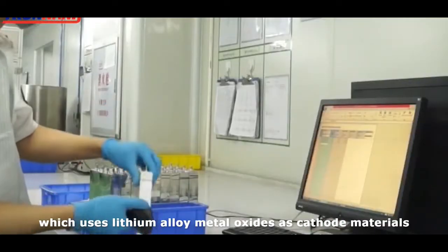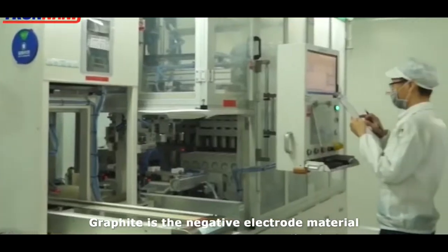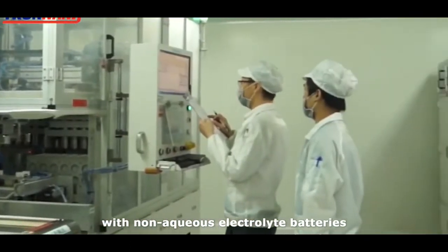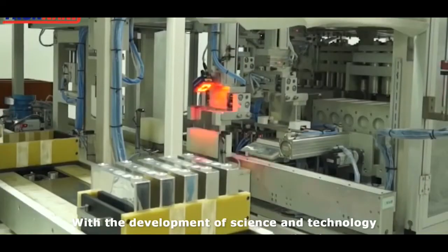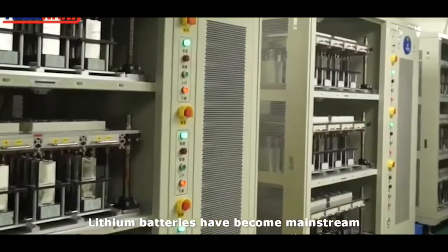as cathode materials. Graphite is the negative electrode material. Use non-aqueous electrolyte batteries. With the development of science and technology, lithium batteries have become mainstream.